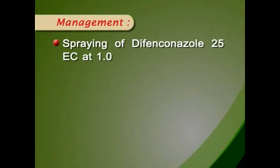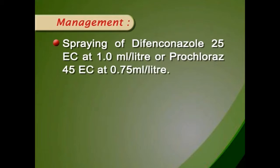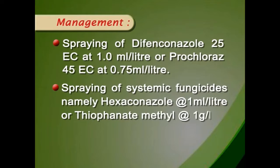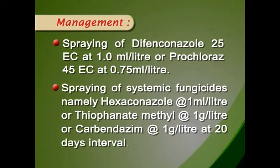The disease is severe during August-September when there is high humidity and temperature between 20 to 27 degrees centigrade. Primary source of inoculum is infected leaves and secondary source is wind-borne conidia. For management, spray difenoconazole 25 EC at 1.0 ml per litre or Prochloraz 45 EC at 0.75 ml per litre. Spray systemic fungicide namely hexaconazole 1 ml per litre or thiophanate methyl 1 g per litre at 20 days interval, which is quite effective.